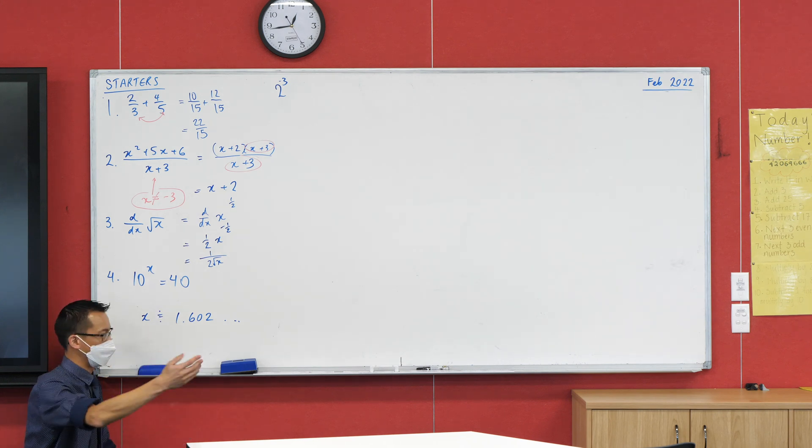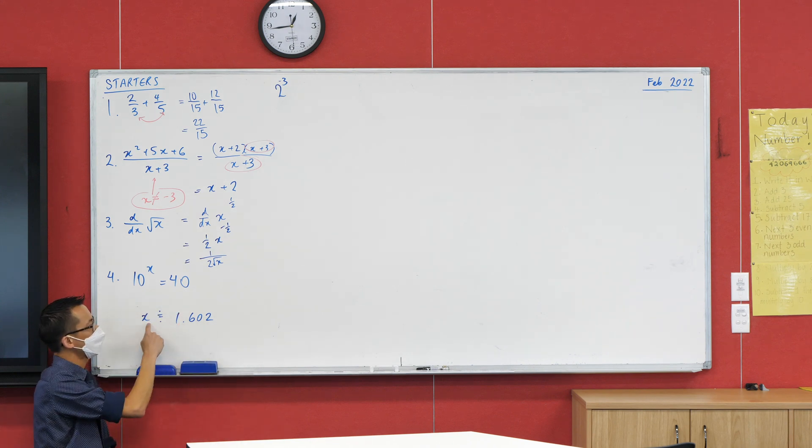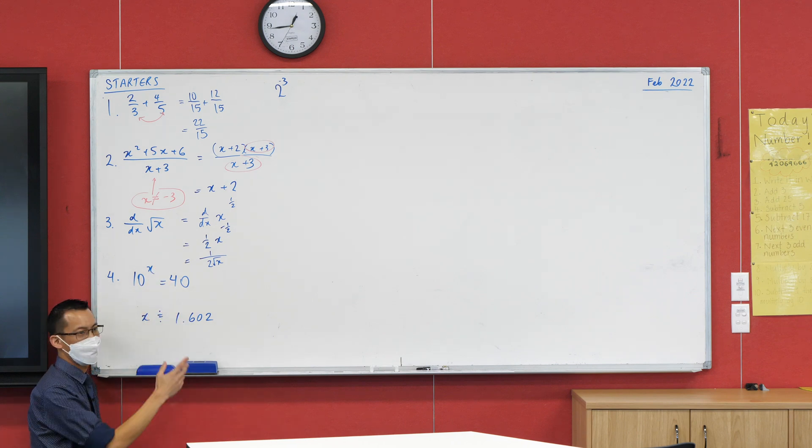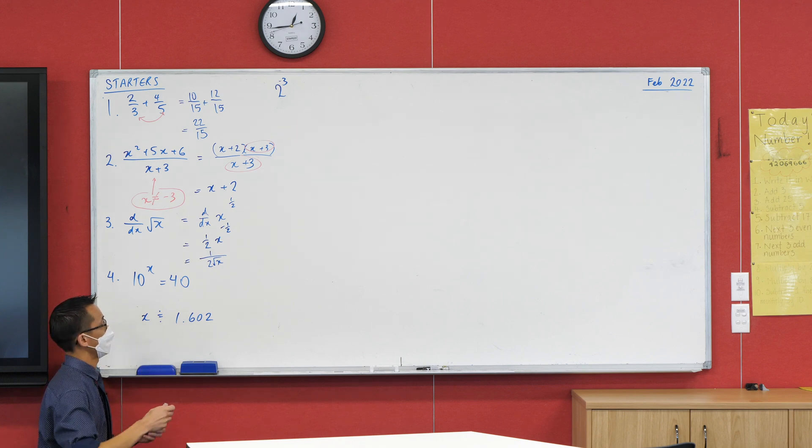You could actually check, because you've got a calculator there, right, and we would need a calculator to handle this. You could just put this in and see if it works. 10 to the power of 1.602. Now, because we've rounded, I'm guessing it'll be like 39 something or other. Yeah, sure.